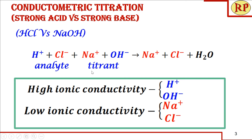Out of these ions, H⁺ and OH⁻ are fast-moving ions with high ionic conductivity, giving more conductance. Cl⁻ and Na⁺ are slow-moving ions with low ionic conductivity and contribute less to conductance.